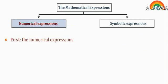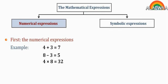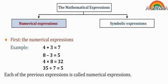First, Numerical Expressions. Examples: 4 plus 3 equals 7; 8 minus 3 equals 5; 4 times 8 equals 32; 35 divided by 7 equals 5. Each of the previous expressions is called a Numerical Expression.